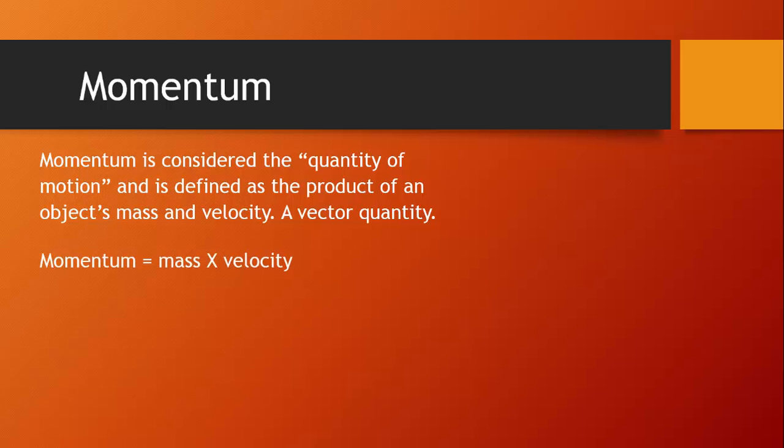So momentum is mass times velocity, and if we write this out like a normal equation, we will write p equals mv. That's right, p stands for momentum. Nobody knows why. m is mass, v is velocity.